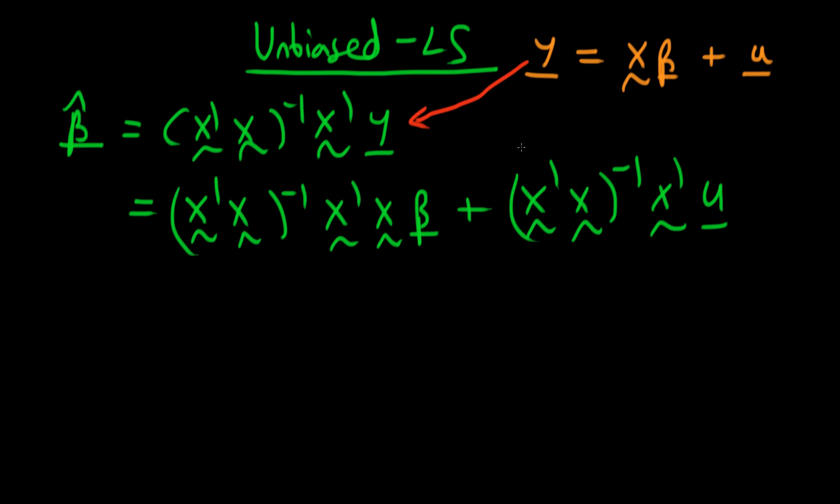And how can I simplify this thing? Well this is actually just some matrix inverted times itself and we know from the definition of the inverse of a matrix that the inverse of a matrix A times itself is in fact just the identity matrix. And then the identity matrix times beta is just the vector beta.